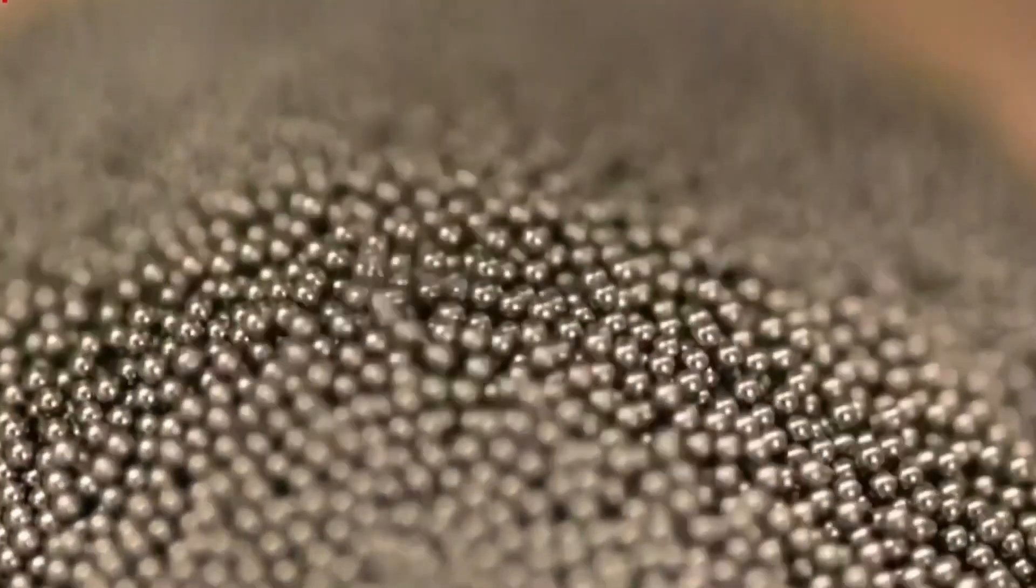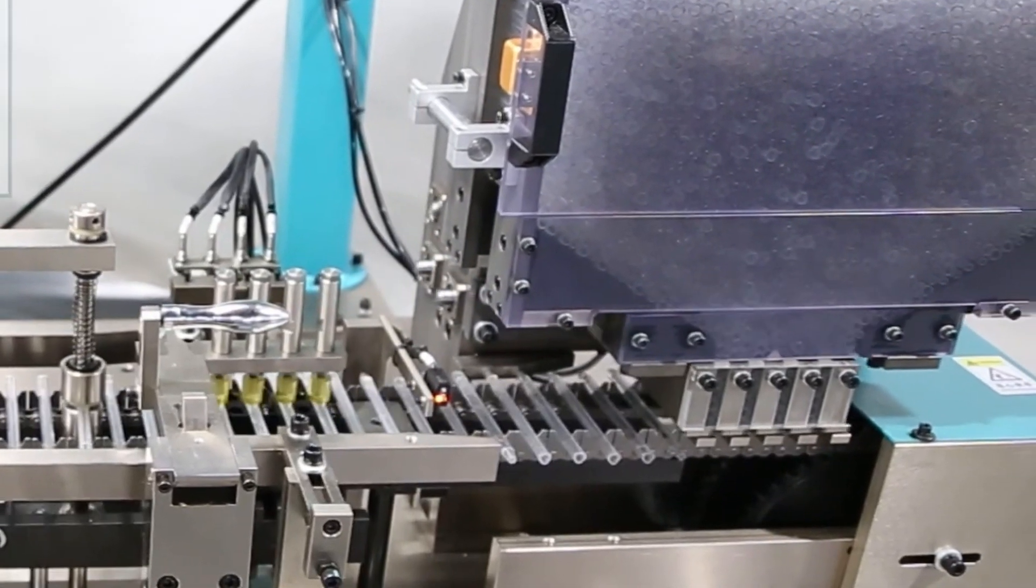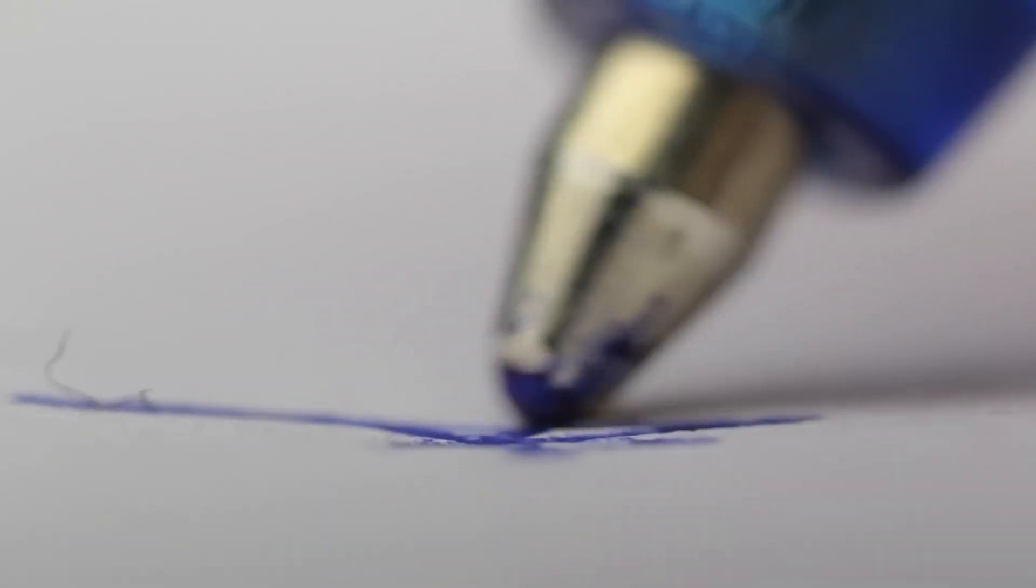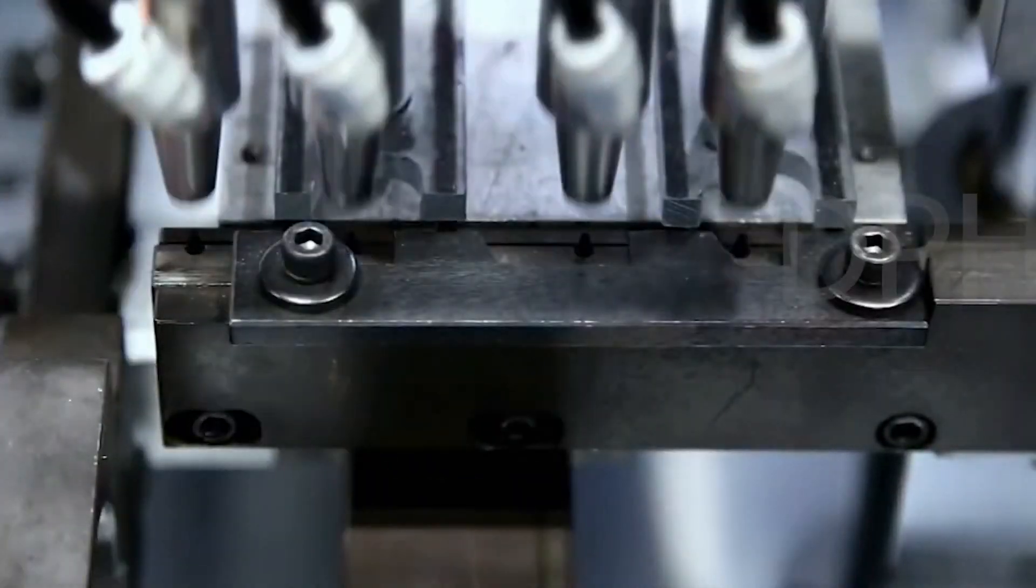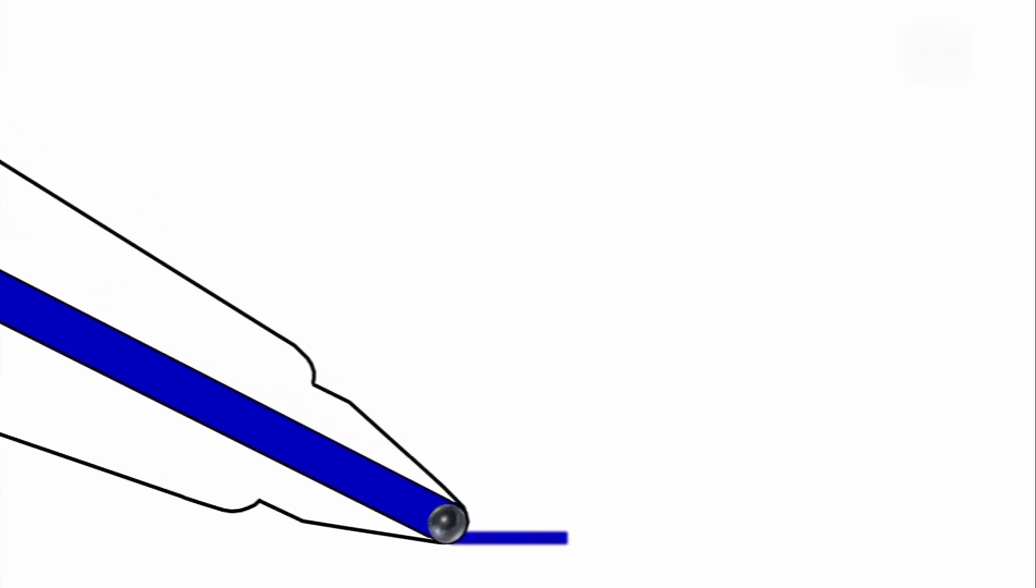First, the pen's metal ball is inserted into its socket at the tip, which is crucial for ink delivery. This tiny ball must roll freely within its housing to regulate the flow of ink onto the paper. This assembly step is meticulous, ensuring that the ball neither jams nor allows ink to leak.